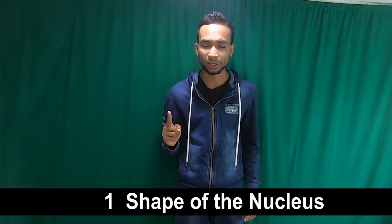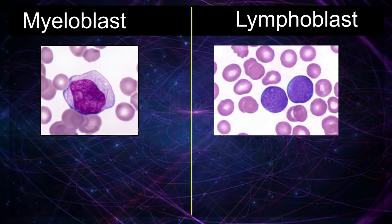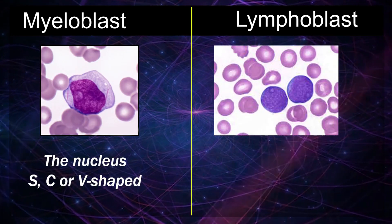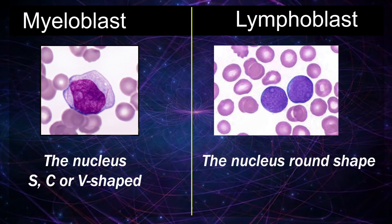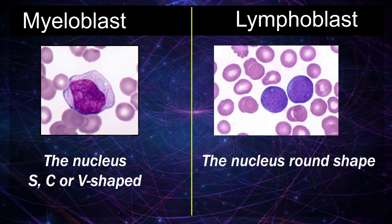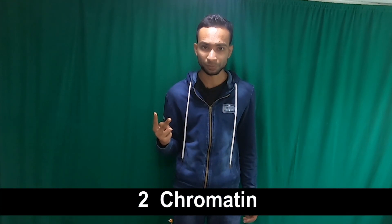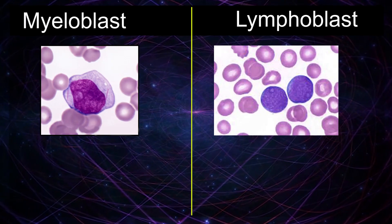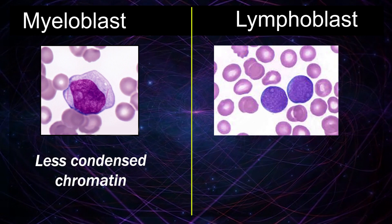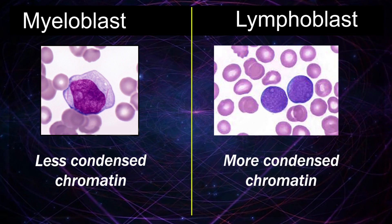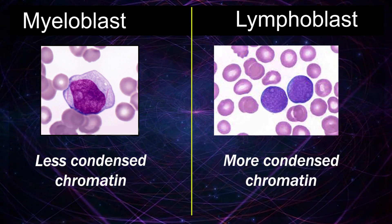Differences. Difference number one — shape of the nucleus: the nucleus of a myeloblast is indented, H, C, or V shaped, but the nucleus of a lymphoblast is round shaped. Difference number two — chromatin: myeloblast contains less condensed chromatin, while lymphoblast contains more condensed chromatin.